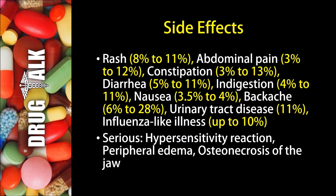As with all medications, there are some side effects or adverse reactions that patients may experience while using Risedronate. 8 to 11% of patients may experience a rash, while 3 to 12% may experience abdominal pain. Constipation happens 3 to 13% of the time and diarrhea 5 to 11% of the time. 4 to 11% may experience indigestion and 3.5 to 4% may experience nausea. A backache may happen to 6 to 28% of patients. Urinary tract disease may occur 11% of the time and up to 10% may experience influenza-like illness.